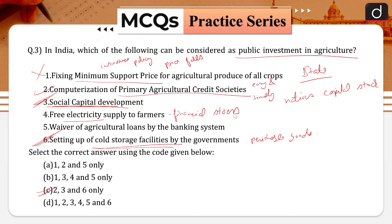Waiver of agricultural loans is not investment as it affects the health of the banking sector. Therefore, five is also not correct. First, fourth, and fifth are not correct. Therefore, the correct answer is option C, that is 2, 3 and 6.